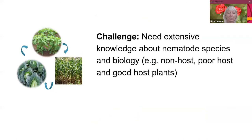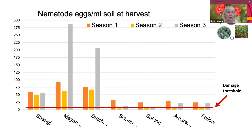The next slide says a little bit more about the challenge — we do need knowledge about the species and their biology. We know for some, but there's still work to be done. This graph is an example from a field trial in relation to potato cyst nematodes — a field trial over three seasons measuring the nematode population in those seasons.